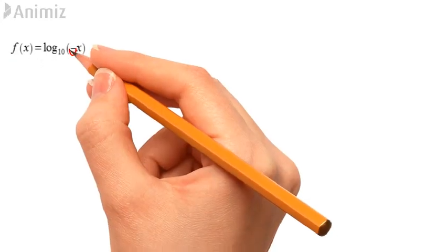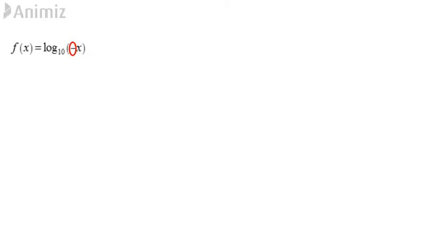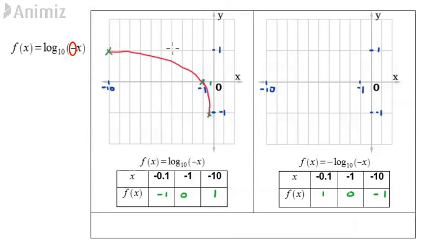How about the logarithmic functions with negative x? We are going to sketch log negative x base 10. Plot all the points: (-0.1, -1), (-1, 0), (-10, 1). Draw a smooth curve connecting all these points. The graph is on the left-hand side of the axis. Label the graph as f(x) equals log base 10 of negative x.